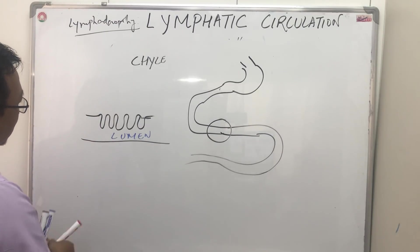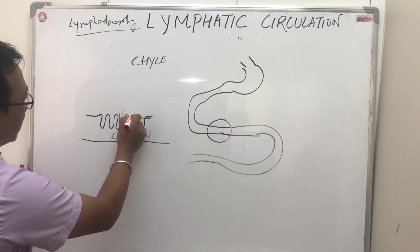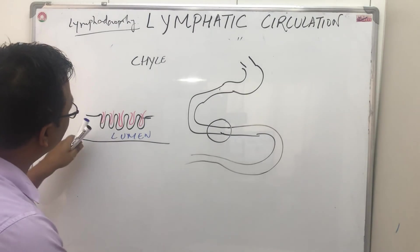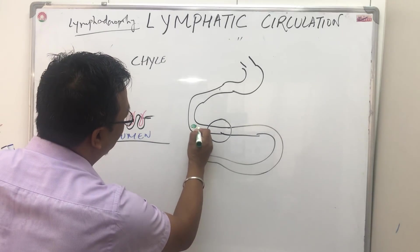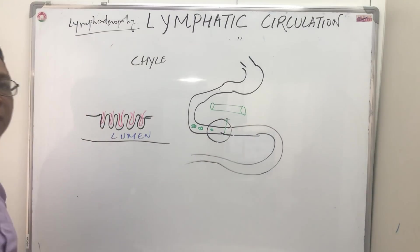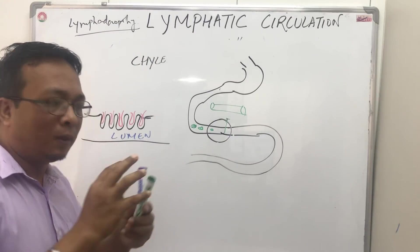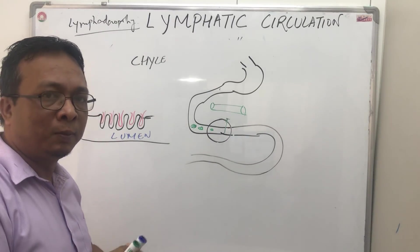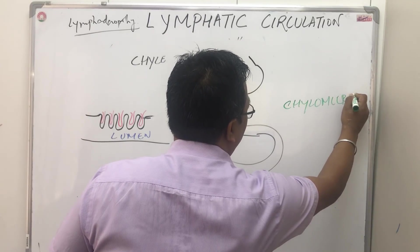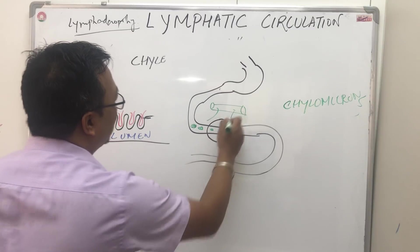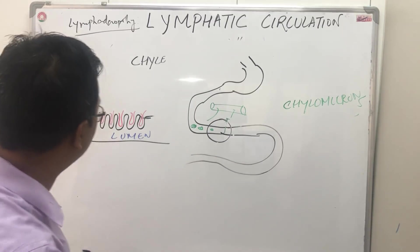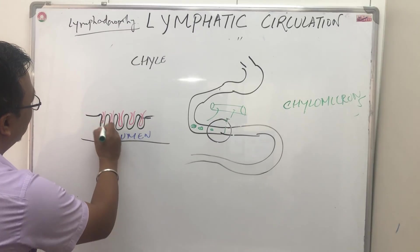Inside the villi there is lymphatic circulation — these are blind loops. The fats coming into the small intestine cannot simply be absorbed into the blood circulation because they are packaged into small structures called chylomicrons. Chylomicrons cannot be absorbed into the surrounding blood vessels, so they require a different kind of transport.